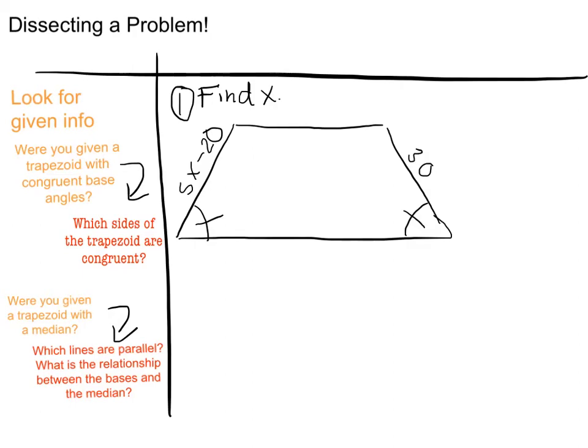So here's our first problem. Question one, the directions are find X. You're given a trapezoid so those two sides are parallel and they're telling you that one of the legs is 5x minus 20 and another leg is 30. What was I given?